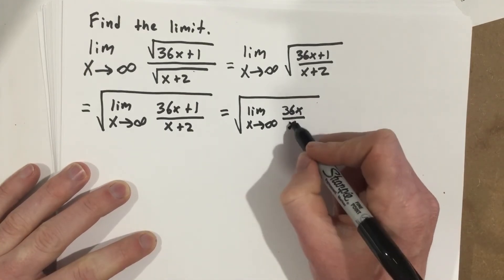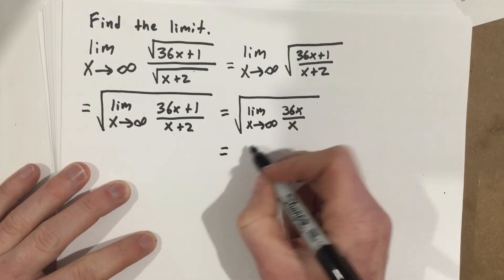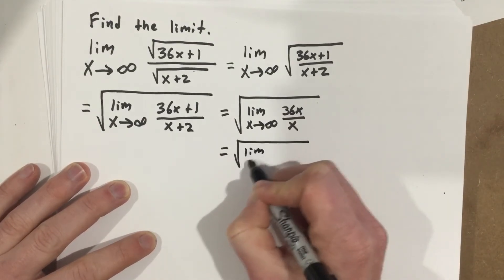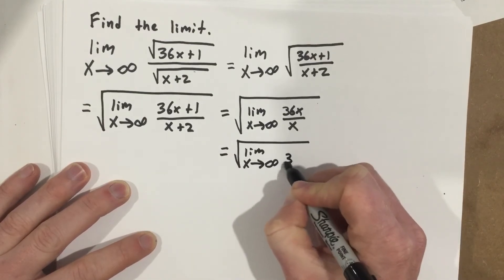At this point we can start to simplify, and we can say that equals root limit as x approaches infinity of 36.